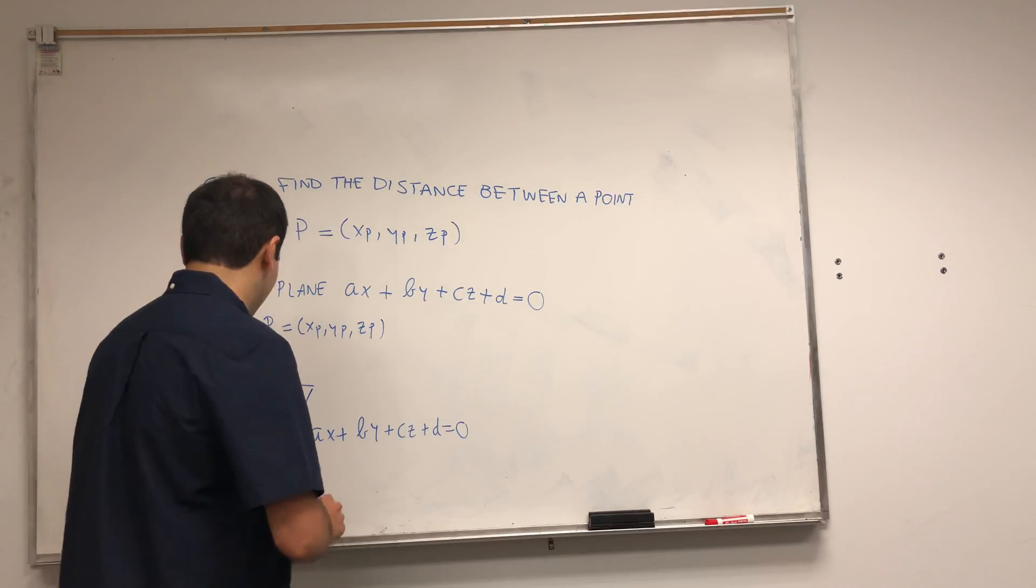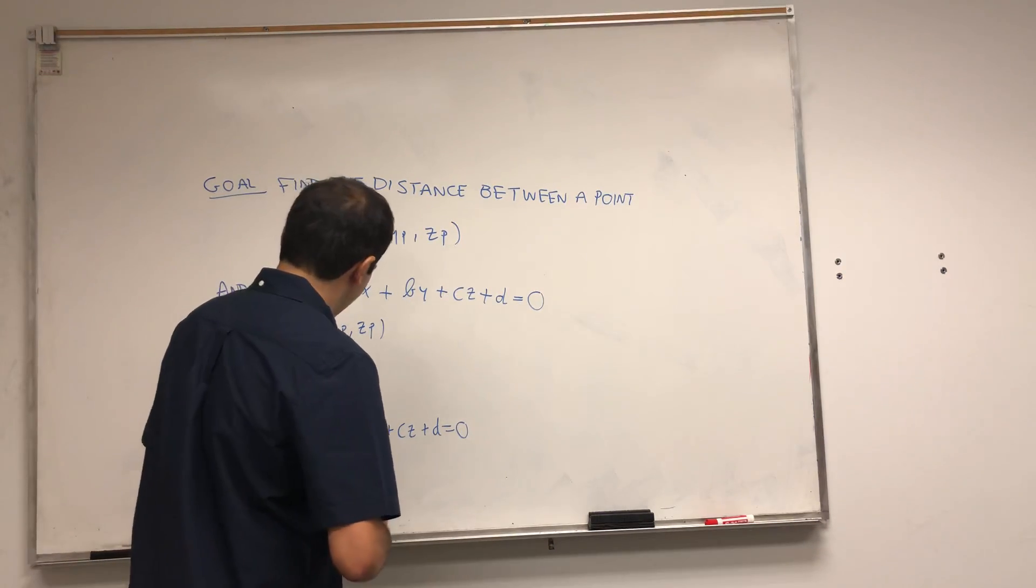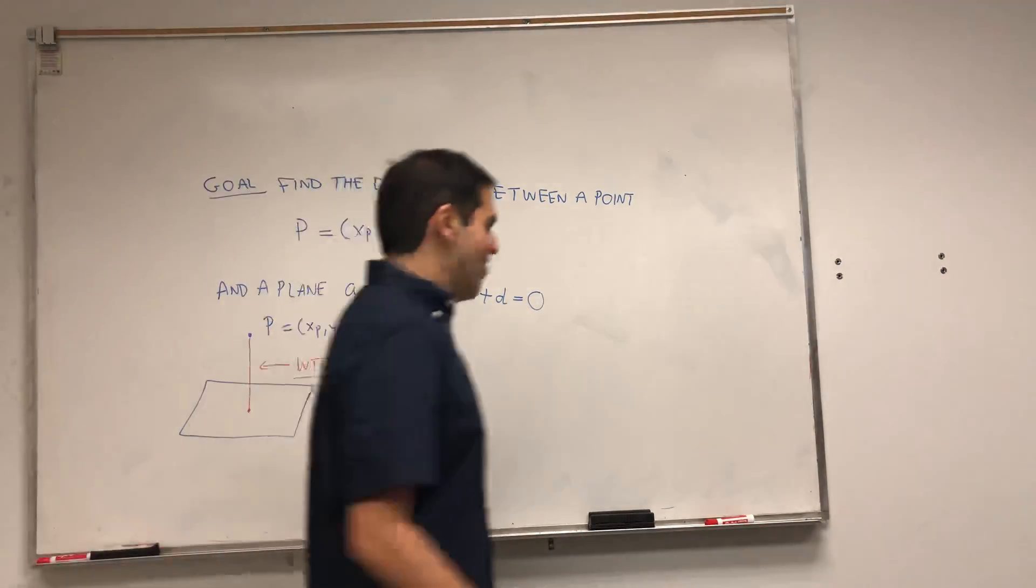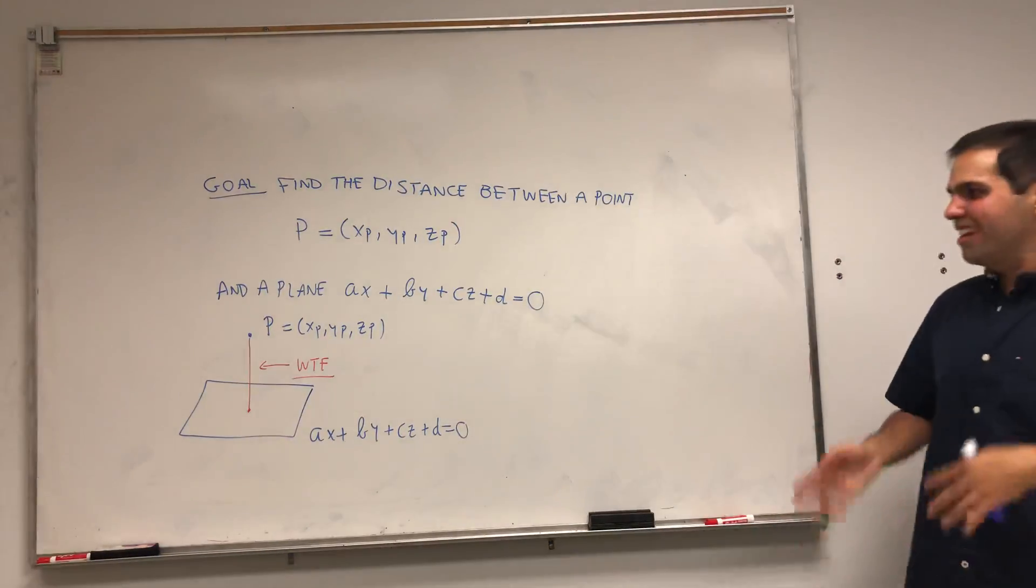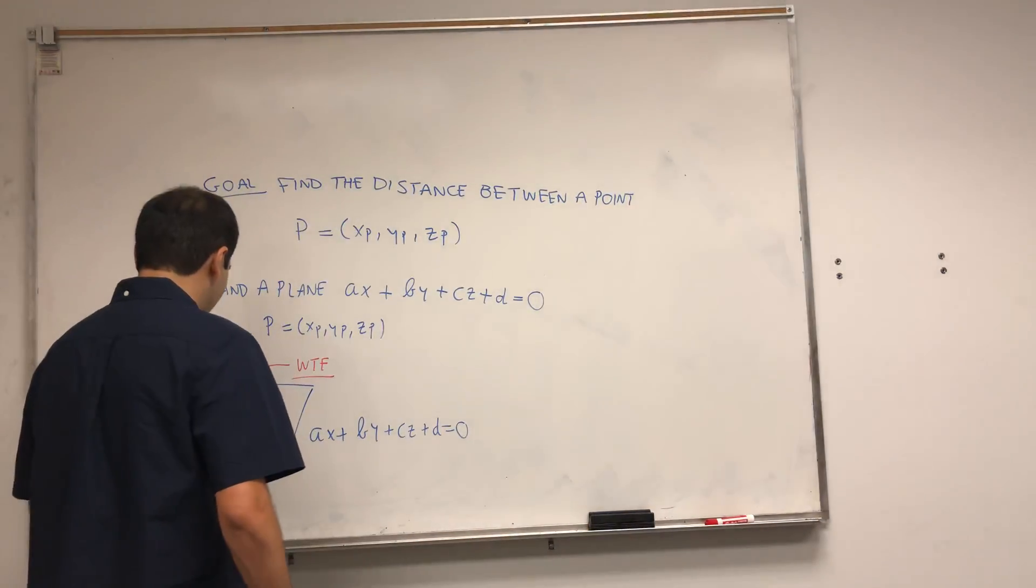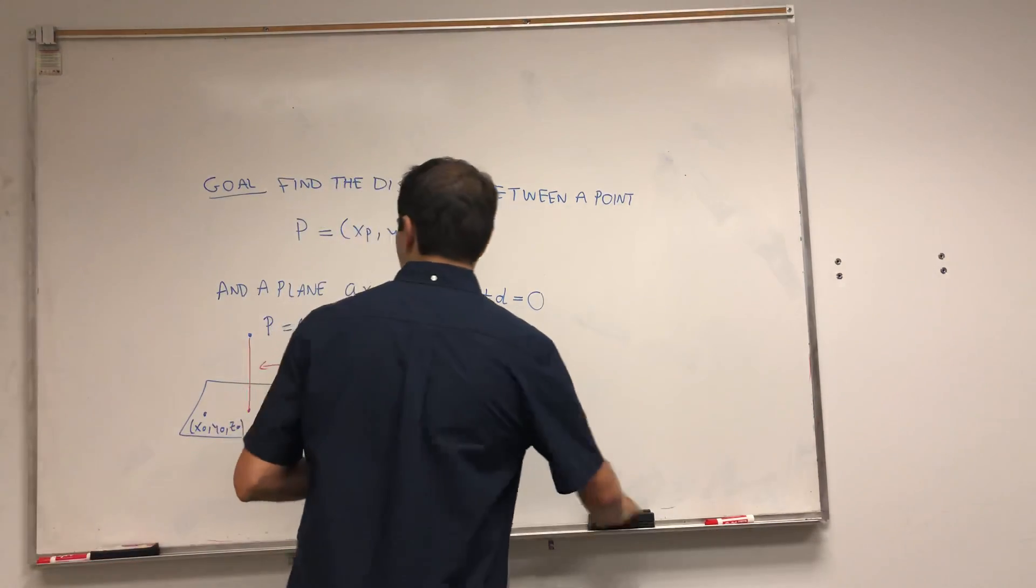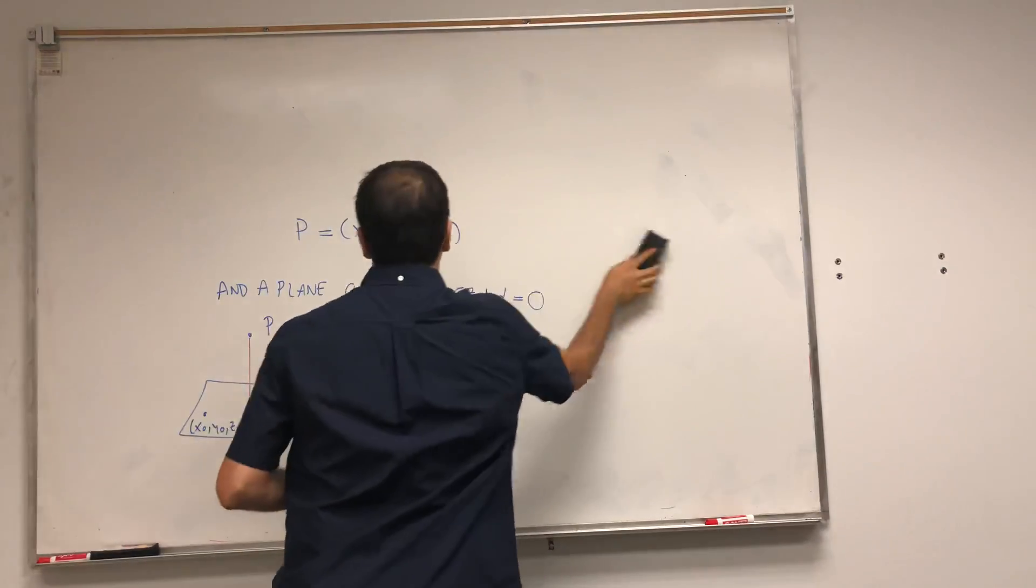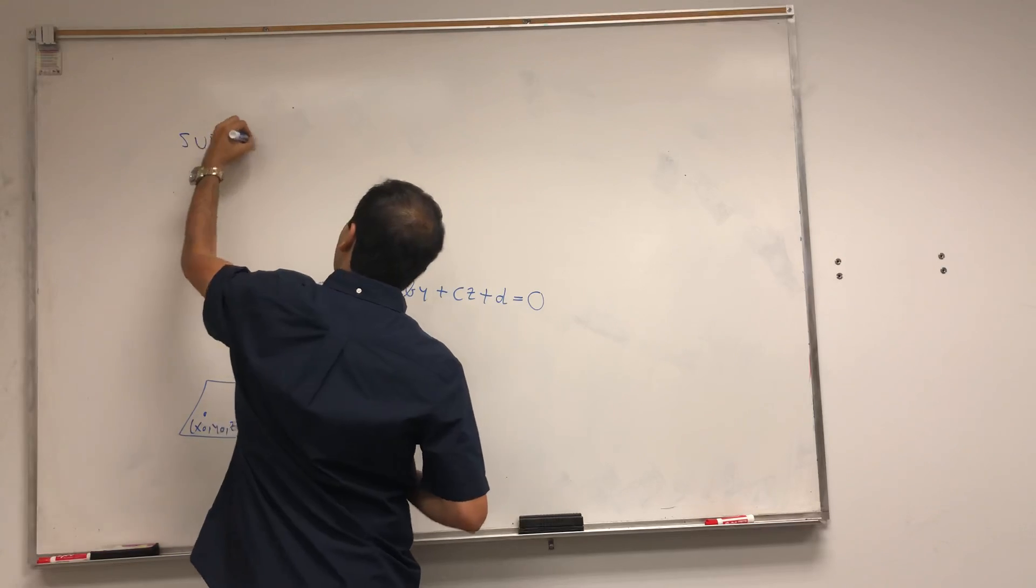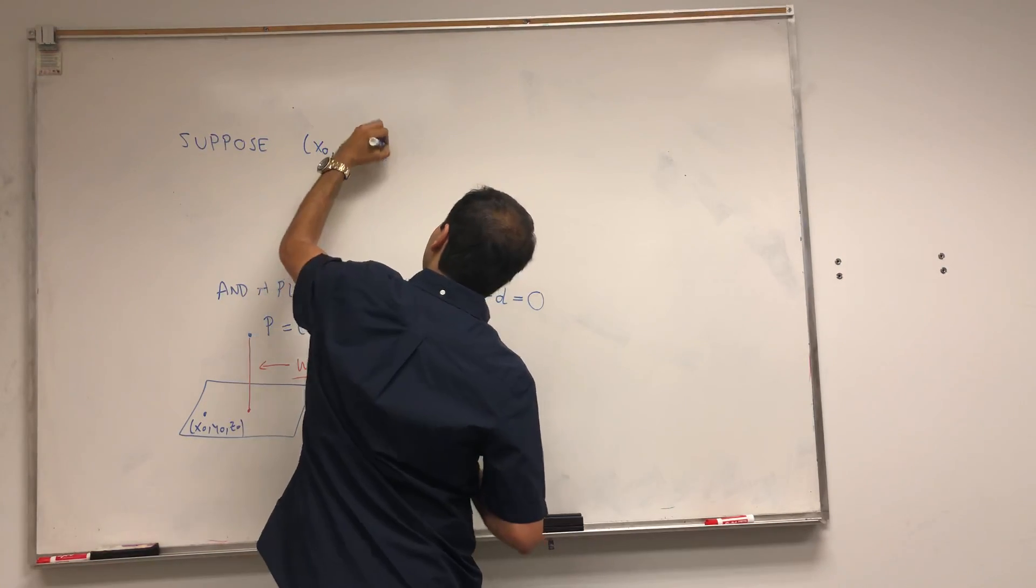So let's start with something. Suppose you have a random point on the plane, let's call this (x₀, y₀, z₀). Suppose (x₀, y₀, z₀) is in the plane.